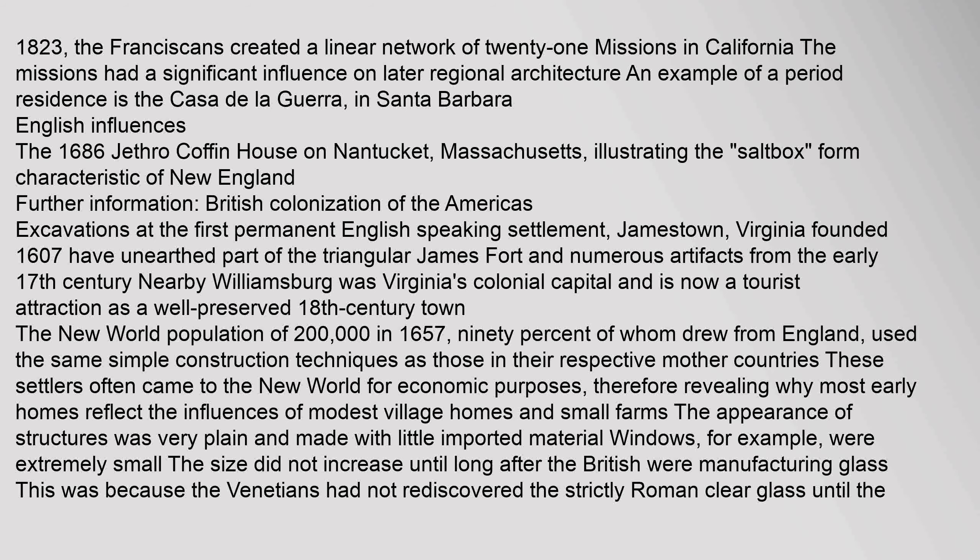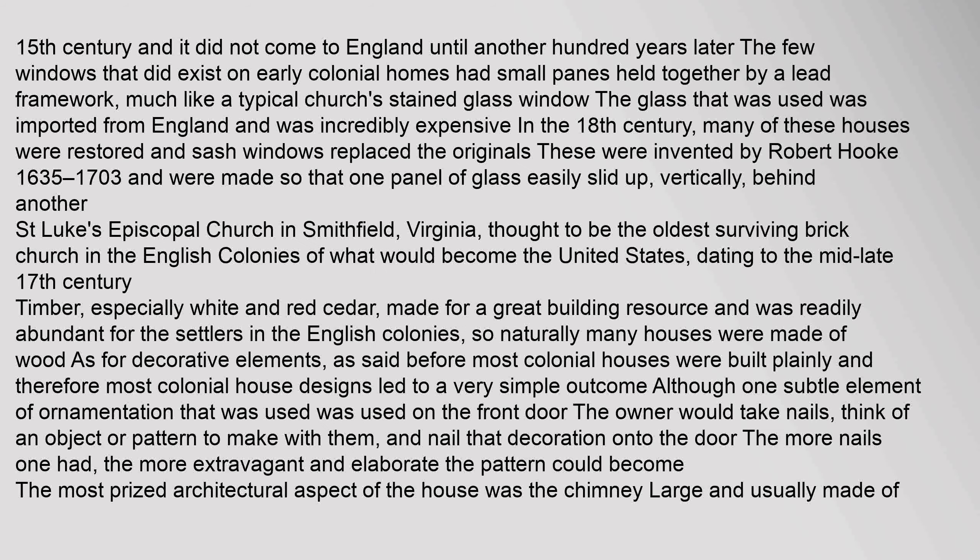Window sizes did not increase until long after the British were manufacturing glass. The Venetians had not rediscovered strictly Roman clear glass until the 15th century, and it did not come to England until another hundred years later. The few windows in early colonial homes had small panes held together by a lead framework, much like a typical church's stained glass window. The glass used was imported from England and was incredibly expensive. In the 18th century, sash windows replaced the originals; these were invented by Robert Hooke (1635–1703) and were made so that one panel of glass easily slid vertically behind another. Timber, especially white and red cedar, was a great building resource and readily abundant for settlers in the English colonies.